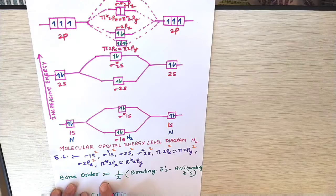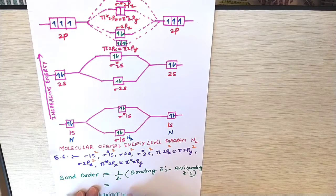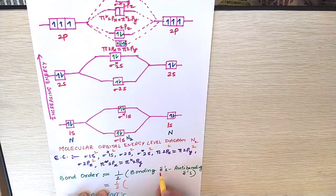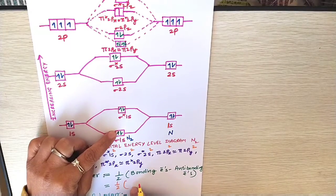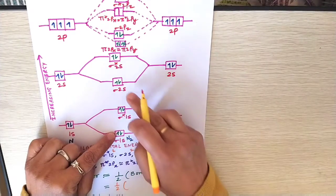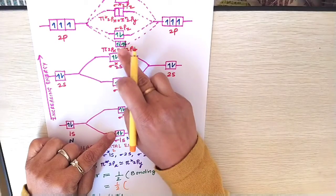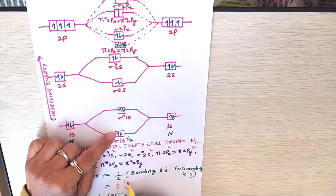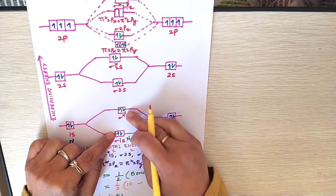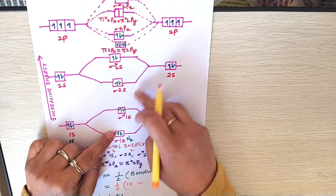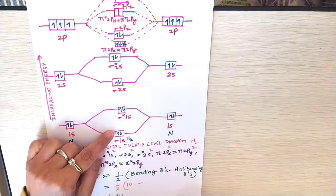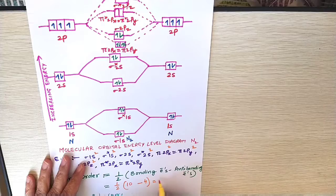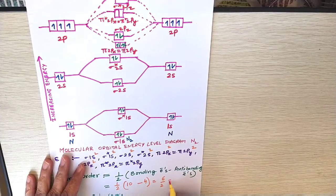Now calculate the bond order. Put the formula here. Bonding electrons. How many bonding electrons without star? 2, 4, 6, 8, 10. So 10 minus anti-bonding electrons, 2, 4, 4. So this will be equal to 6 by 2, 3.